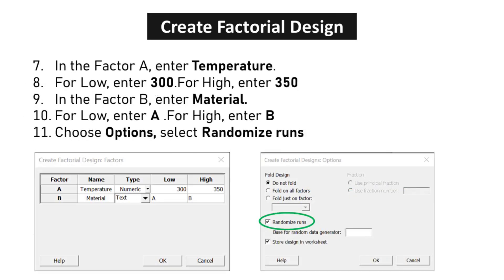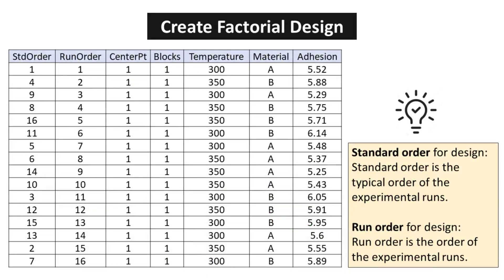In factor A, enter Temperature. For low, enter 300; for high, enter 350. In factor B, enter Material. For low, enter A; for high, enter B. Choose Options and select Randomize Runs. The table shows the DOE result created from Minitab. Standard order is the typical order of the experimental runs, and run order is the order of the experimental runs.